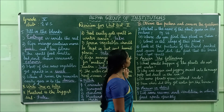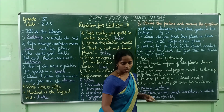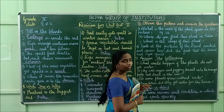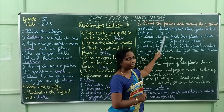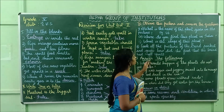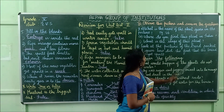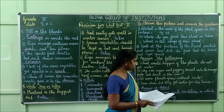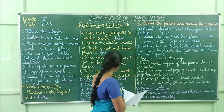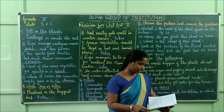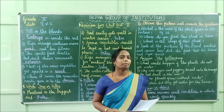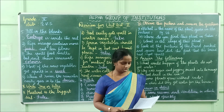Observe the picture and answer the questions. Look at the picture in your given room — observe it and answer. First question: what is the name of the plant given in the picture? The answer is pitcher plant, spelling P-I-T-C-H-E-R plant.